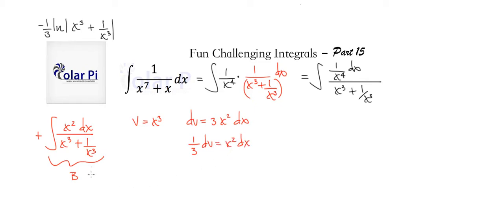And with this handy, our integral b could be rewritten somewhere over here as follows. We could write a third in front of the integral, and then our numerator just turns into dv. And that's from this, a third dv equals x squared dx. Okay, and then our denominator is going to be v plus 1 over v.